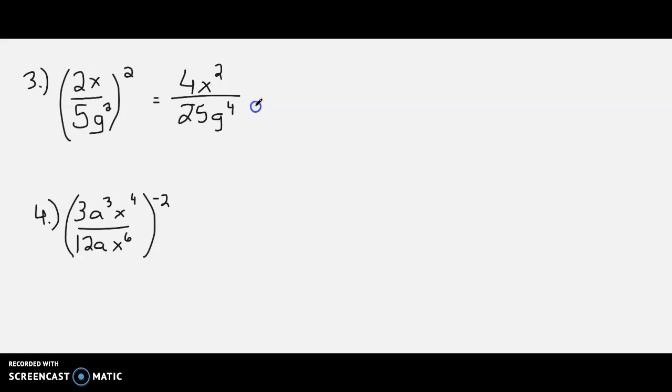And that is pretty much it. Nothing else simplifies top or bottom. So we just have 4x squared in the numerator, 25g to the 4th in the denominator.